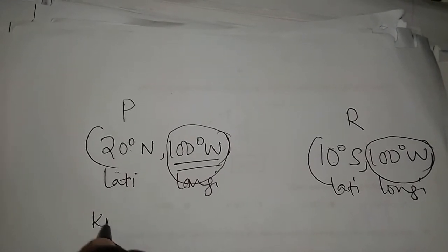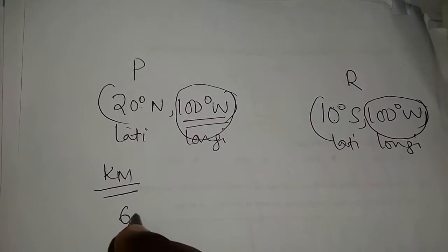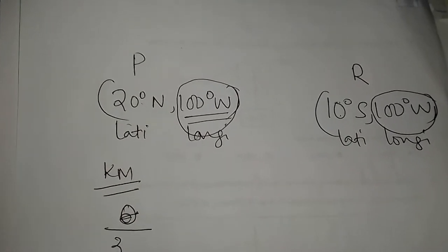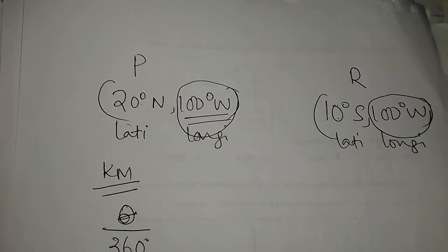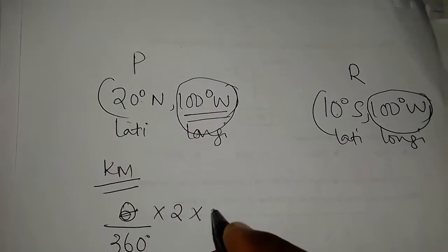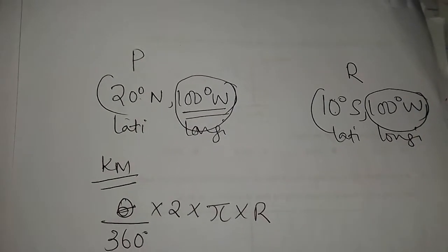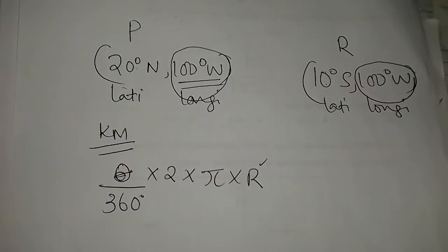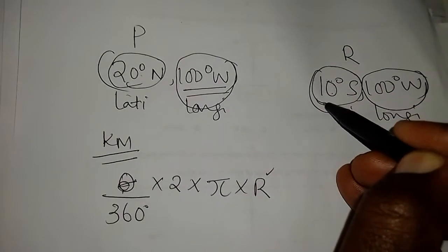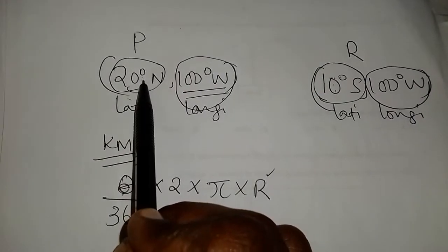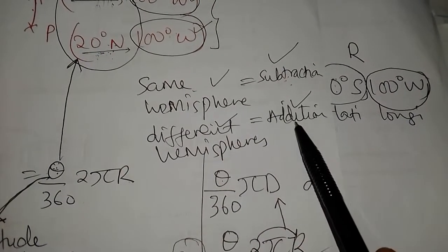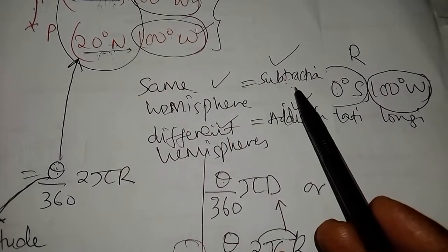And in that case, the formula of getting the distance in kilometers will be theta, the angle obtained at the center of the circle by that arc, divided by 360, the sum of angles at a point, times 2 times pi times r, radius of the earth. The theta can be obtained by looking at the latitudes. What I did in my last video, if the two latitudes are in different hemispheres, we always add them together. Different hemispheres, addition gets done. Same hemispheres, subtraction gets done.